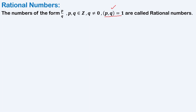This is also pronounced as: p and q are relatively prime, or we can say p and q are co-primes.